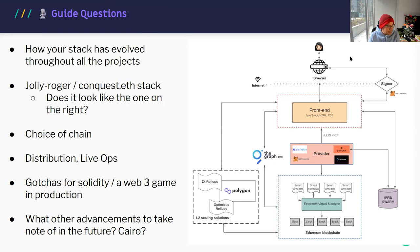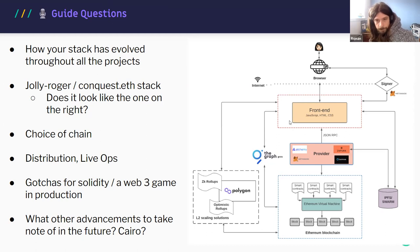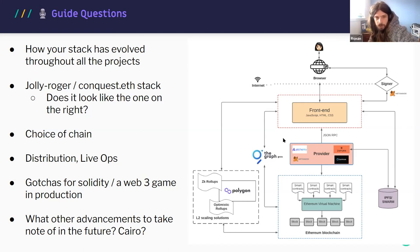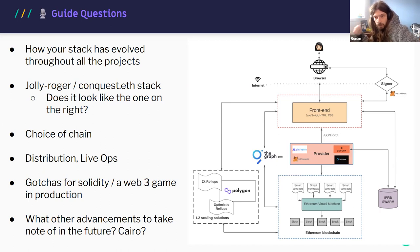Moving to frontend choices: for Jolly Roger, Ronan uses Svelte and Tailwind, and Conquest is essentially a fork of Jolly Roger. Why Svelte and Tailwind?